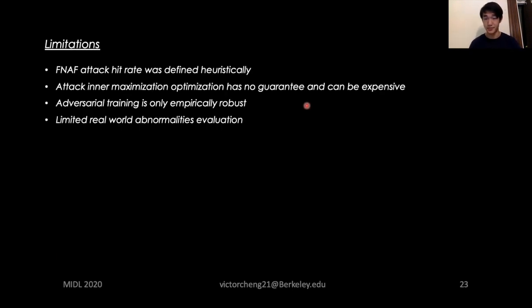We have some limitations including that the FNAF attacks hit rate was defined heuristically. Fortunately, we only need to care about the pixel level loss and not the hit rate when doing FNAF training and evaluation to real-life abnormalities. Secondly, our attack maximization optimization can be a little bit expensive and has no guarantee currently. Hopefully better optimization methods and provable verification can help out in the future in this area. Thirdly, FNAF training is only empirically robust. More theoretical work should be put in for provable robustness in this area. And lastly, to generalize to real-world abnormalities, you might need to relax the FNAF space constraint more to potentially include real-life abnormalities in training. And in evaluation, we need more manual labeling or use existing abnormality datasets.